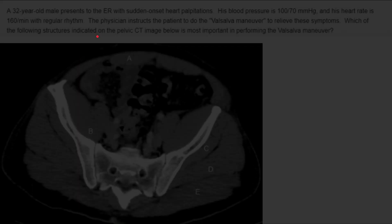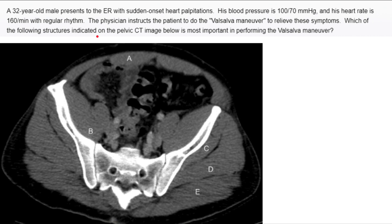As I said, radiology, fractures, and nerve supply are the three high-yield points to focus on in anatomy. The next question shows radiology and asks you to choose. A 32-year-old male presents to the ER with sudden onset heart palpitations. His blood pressure is 100/70 and heart rate is 160 per minute with regular rhythm.